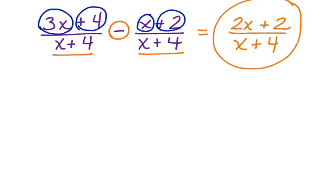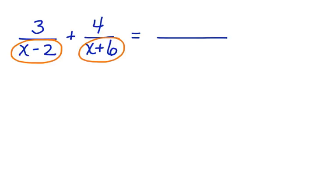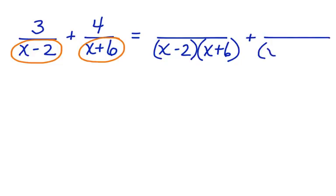Now let's look at a situation where we have an uncommon denominator. 3 over x minus 2, plus 4 over x plus 6. We don't have a common denominator here. However, we can create one by using both of these as our common denominator. We're going to rename both of these rational expressions to have a denominator of x minus 2 times x plus 6, plus x minus 2 times x plus 6.